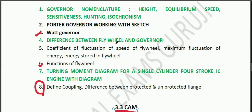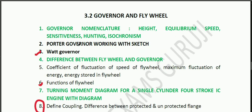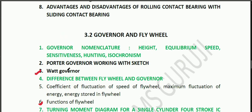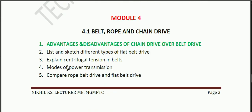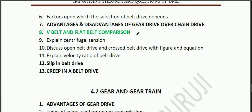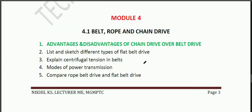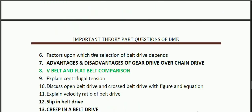Turning movement diagram — the flywheel has different classifications, and the governor will be asked. In the fourth module: belt, rope, chain drive, gear and gear train. Advantages and disadvantages of belt drive.